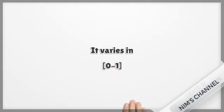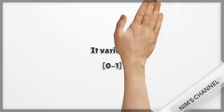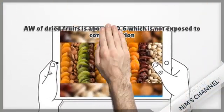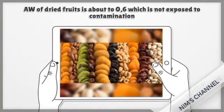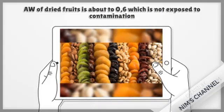Aw varies from 0 to 1 and every substance has a different value. Like dry fruit, it has aw equal to 0.6 which makes them not exposed to contamination.